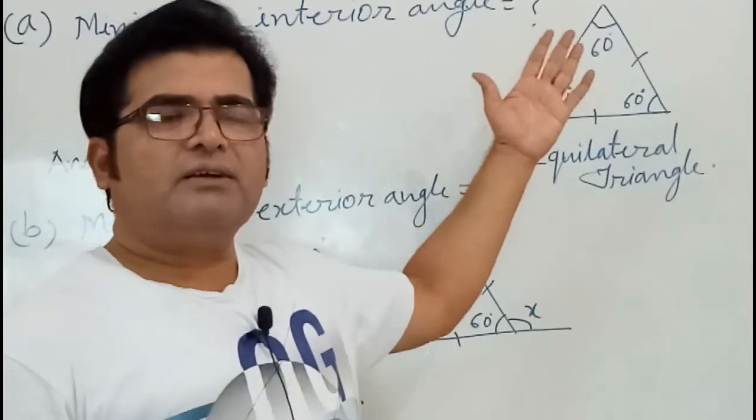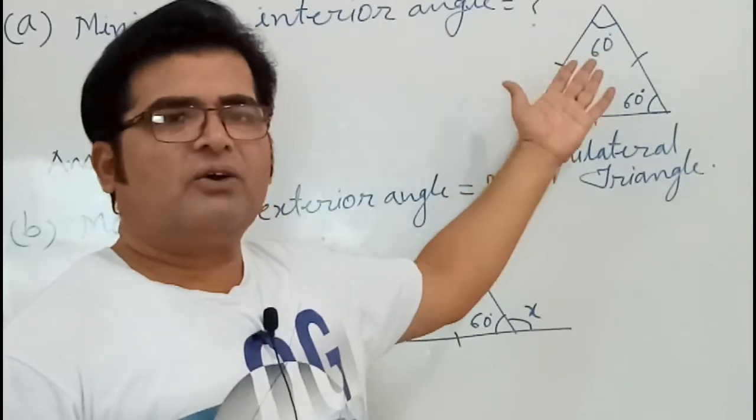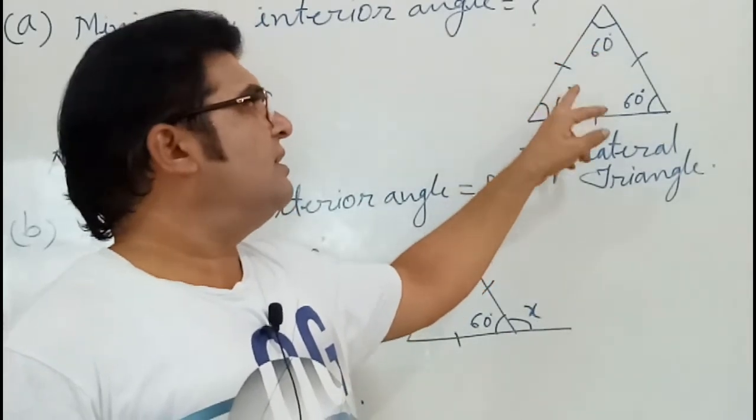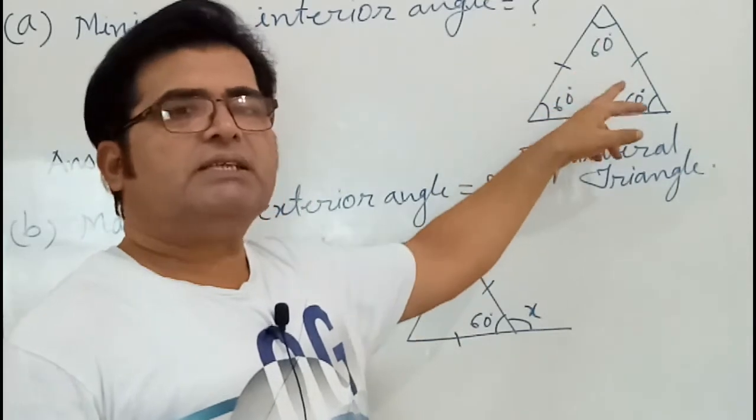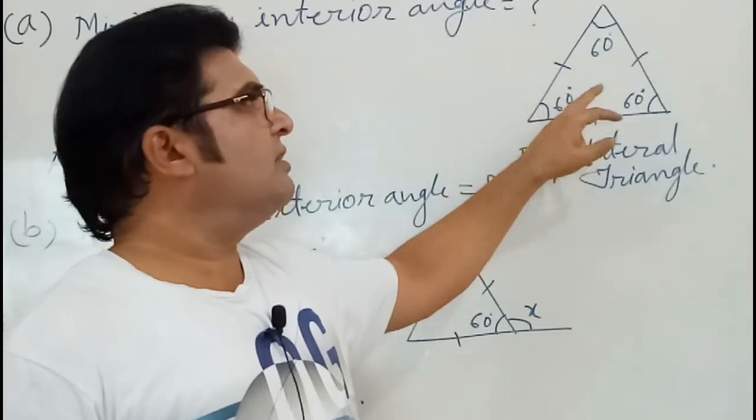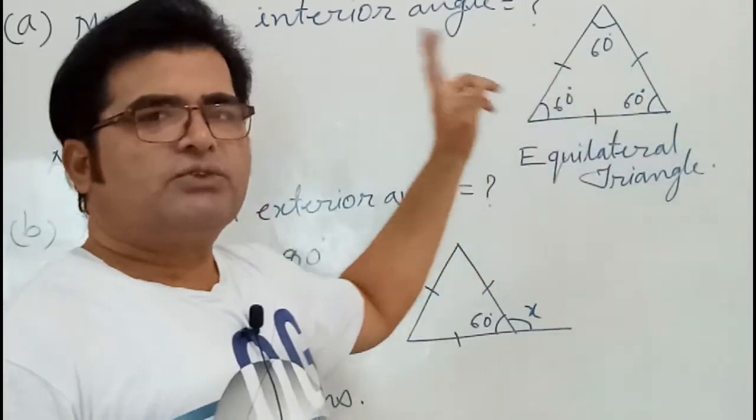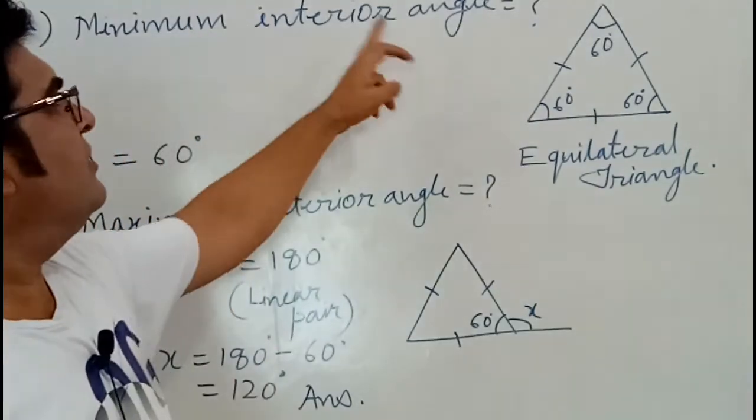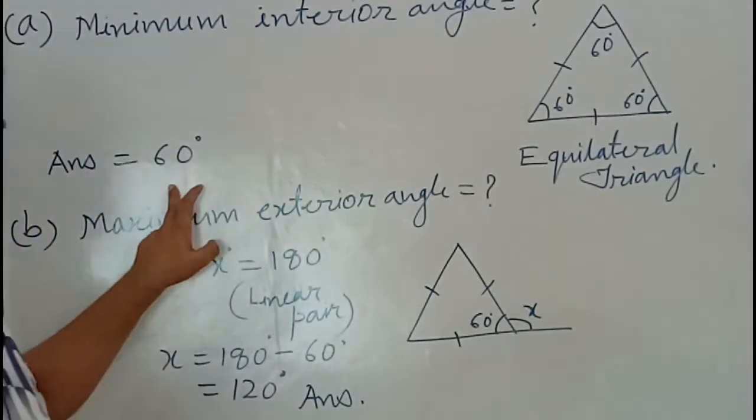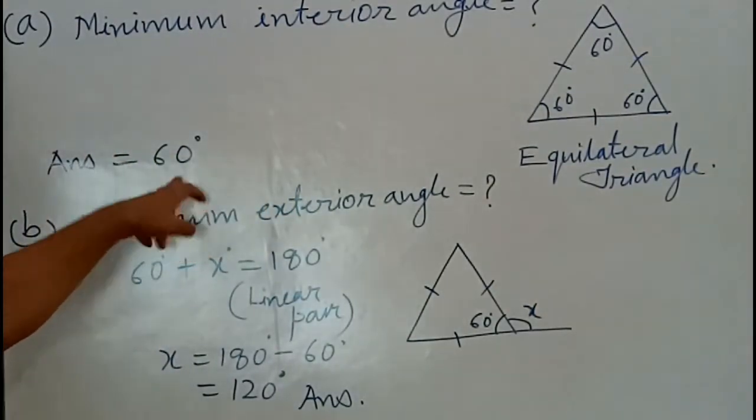We know that in a regular polygon, angles are also equal in measure. The measure of each angle of an equilateral triangle is always 60 degrees. So, the minimum interior angle of a regular polygon is 60 degrees.